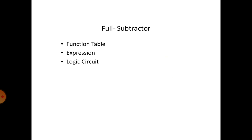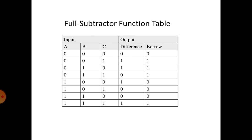Full subtractor — function table, expression, and logic circuits. This slide shows the truth table for full subtractor. Full subtractor is a circuit used to subtract 3 binary bits. It has 3 inputs and 2 outputs. 3 inputs means 2 power 3, which equals 8 combinations, from 0-0-0 to 1-1-1. We calculate the difference and borrow columns for all 8 combinations.